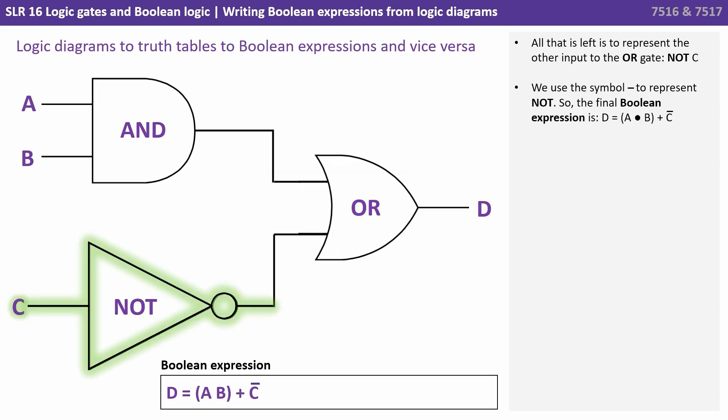All that is left is to represent the other input to the OR gate which is NOT C. We use the line symbol to represent NOT. So the final Boolean expression is D equals brackets A dot B close brackets plus C with a line over.